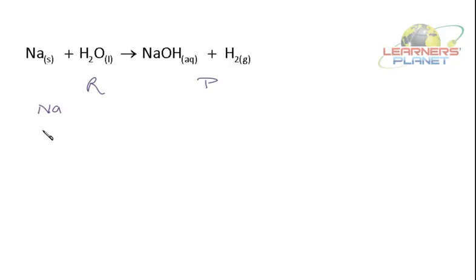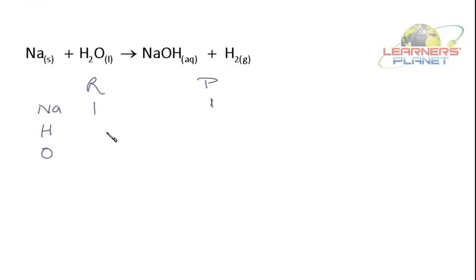Write the elements in a line: sodium, then hydrogen, then oxygen. Is there any other new element? No. Number of atoms of sodium on the reactant side: 1. On the product side: 1. Hydrogen on the reactant side: 2. On the product side: 3 (1 from NaOH and 2 from H₂). Number of atoms of oxygen: 1 on the reactant side, and 1 on the product side. What is needed to be balanced is hydrogen.